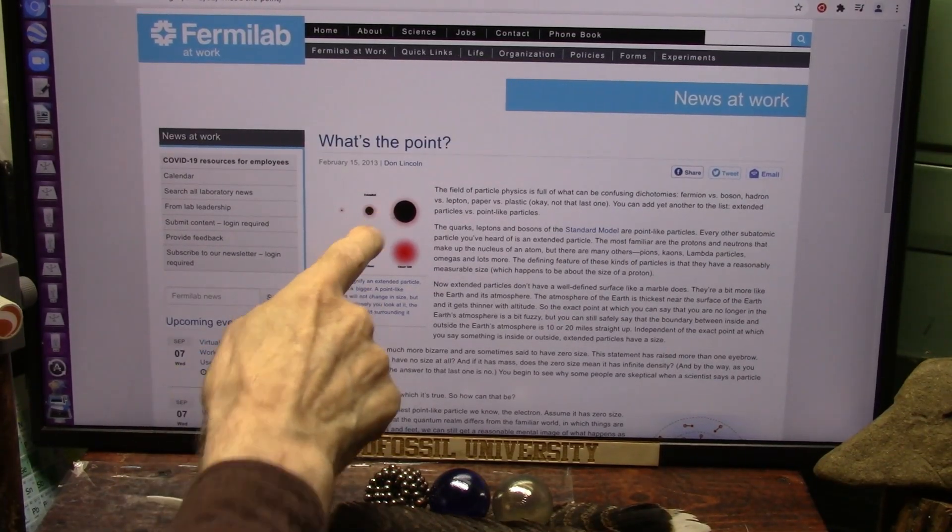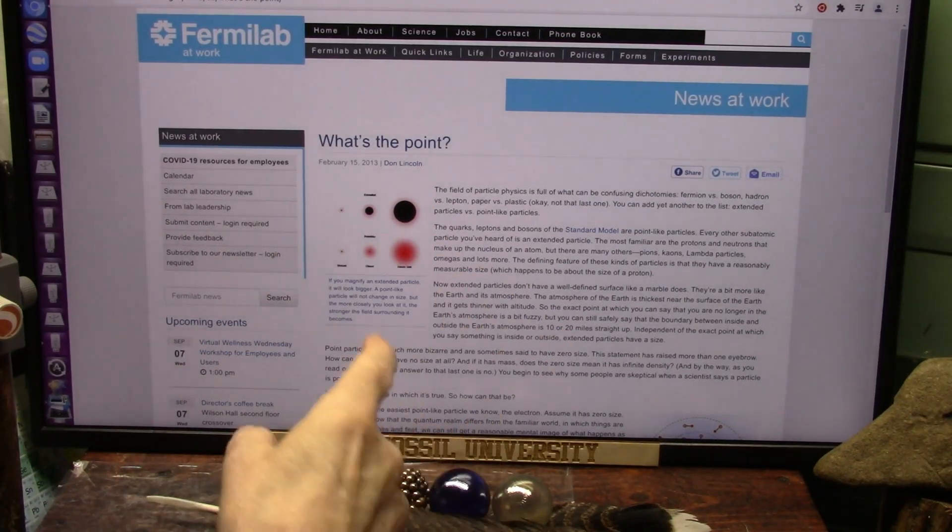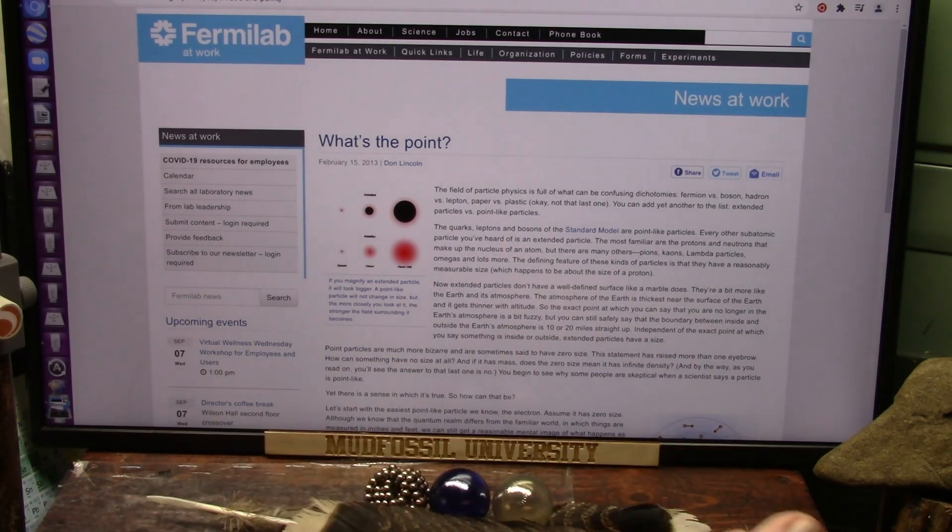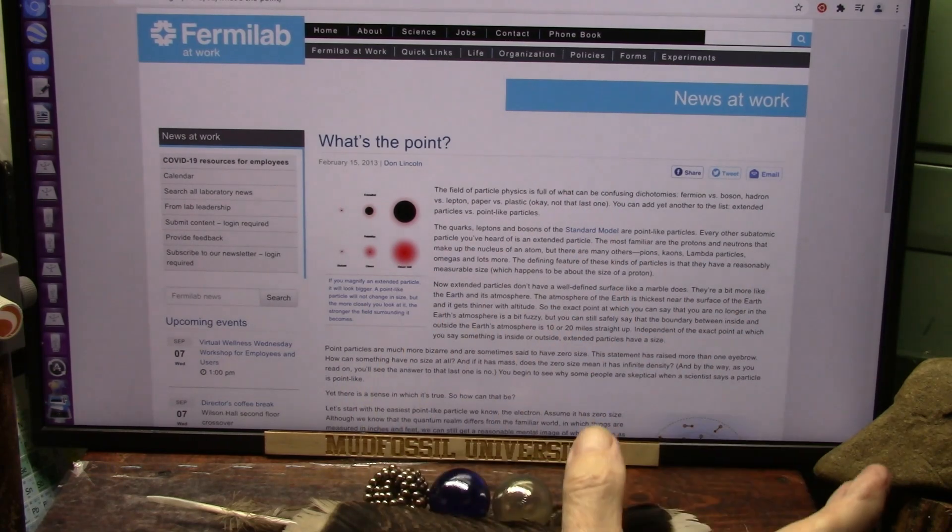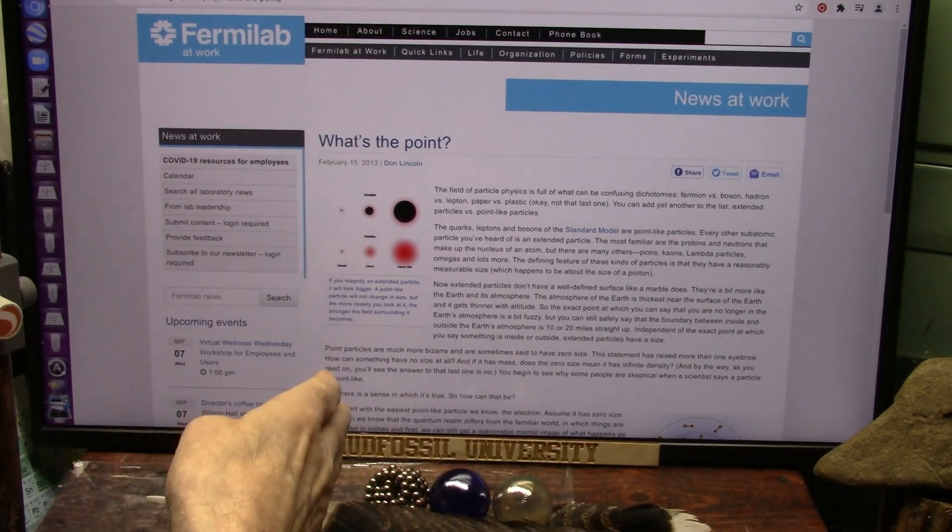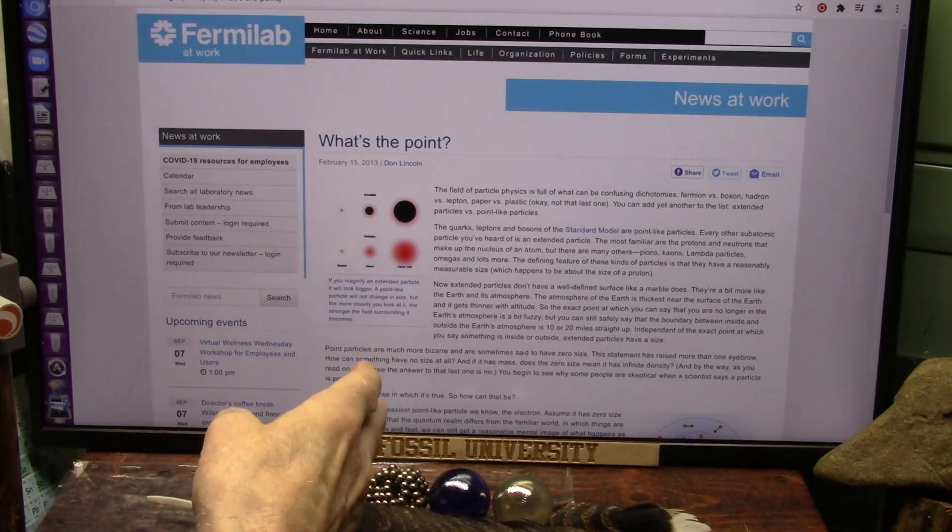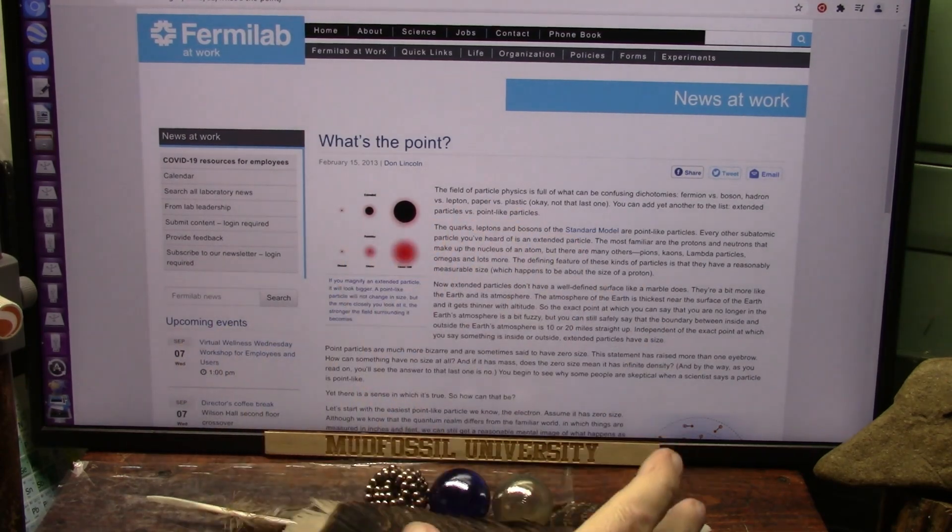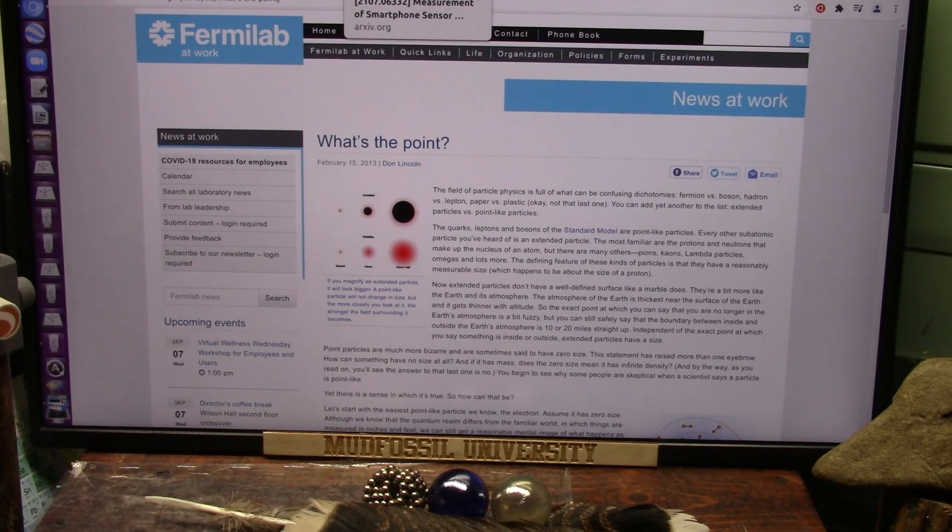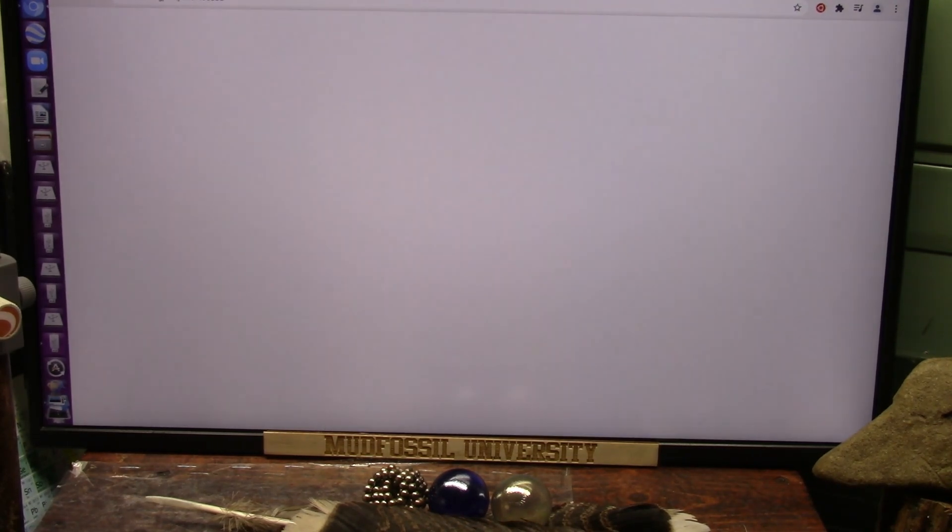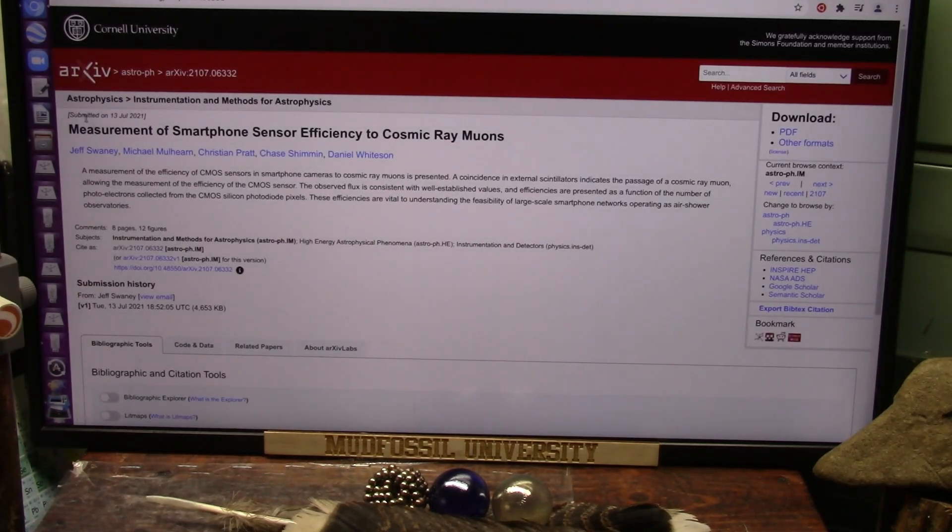This dark matter right there. Fermilab, they call it a fixed particle. Call it whatever you want. It's a black particle in our experiments. We found this the same time they did, and we used strictly a cell phone to see it. You can see it. It's very simple with a cell phone because cell phones pick up the measurement of smartphone sensor efficiently. Cosmic rays.